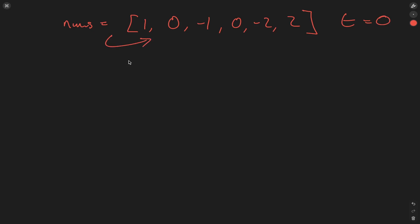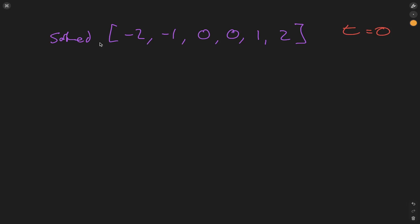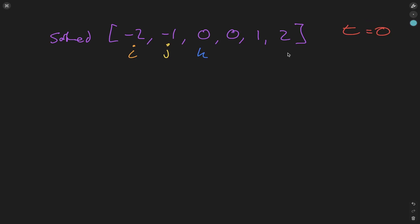So let's first go ahead and sort the array. By taking the two-pointer technique to the extreme, within this question we are going to be using four pointers. The first pointer i is initially set at zero, the second pointer j at i plus one, the third pointer k at j plus one, and the final pointer l at the last value within the sorted array.